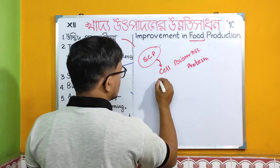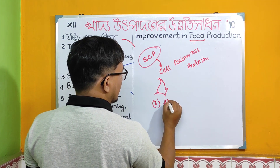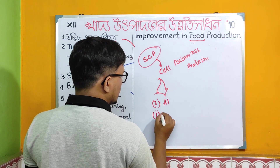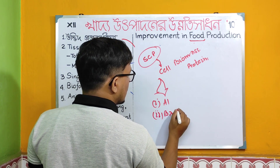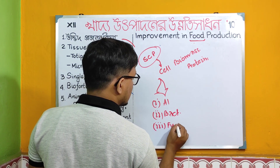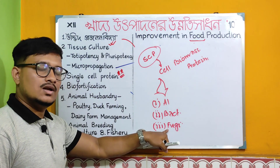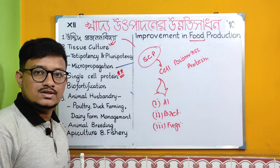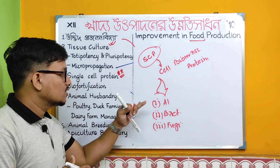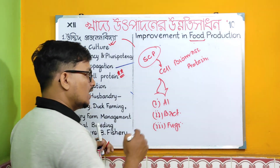Examples of single cell protein sources include algae, bacterial system, and fungi. Different types of protein systems are described. These are the different examples of single cell protein — algal system gives examples, bacterial system gives examples, and fungal system gives examples.